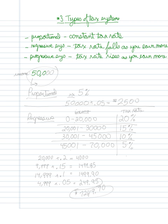Let's say that my income is $50,000. In a proportional system, if the rate is 5%, I would simply have $50,000 times 5%, giving me a tax bill of $2,500.